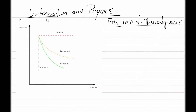You may be asking yourself, when do we use integration when it comes to physics? A great example is when we talk about the first law of thermodynamics, which states that the change in energy is equivalent to the heat minus the work. And the work is actually equivalent to the negative integral of P dV.